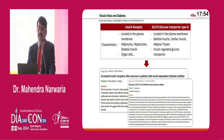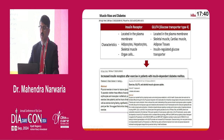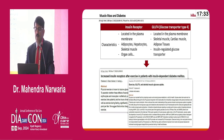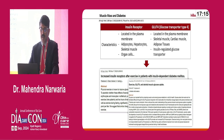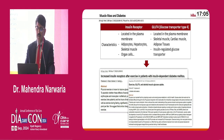Insulin receptors are located in the plasma membrane, adipocytes, hepatocytes, skeletal muscle, and organ cells. The glucose transporter type 4 (GLUT4), responsible for glucose transport, is located in plasma membrane, skeletal muscle, cardiac muscle, and adipose tissue. Glucose is an important fuel for contracting muscle — whatever exercise we do, glucose is mobilized by GLUT4. Increased insulin receptors after exercise in persons with insulin-dependent diabetes lead to greater reduction in insulin resistance compared to those not exercising.